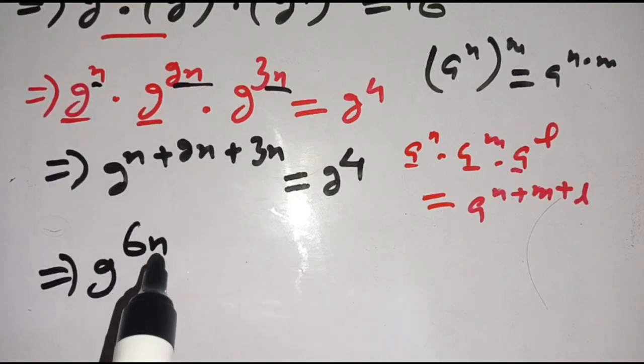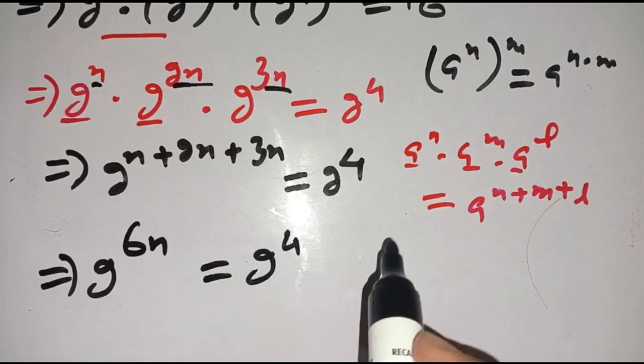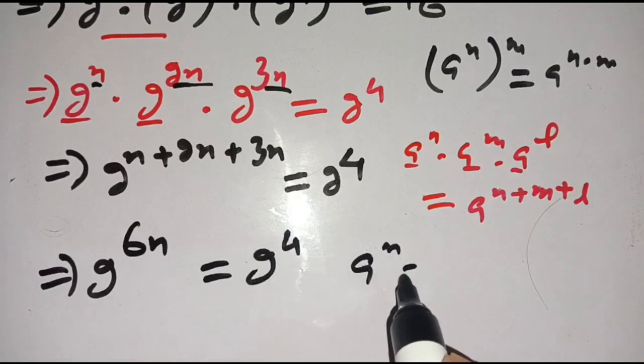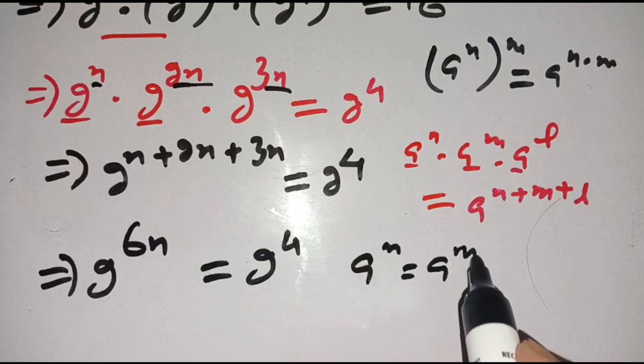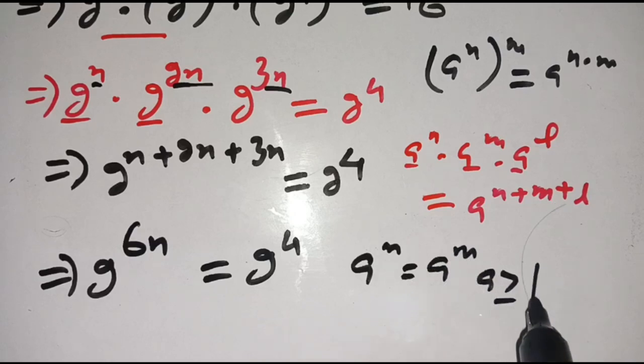And we know that if a power n is equal to a power m and a is greater than or equal to 1, then we can compare its powers, means that n is equal to m. Which implies 6n is equal to 4.